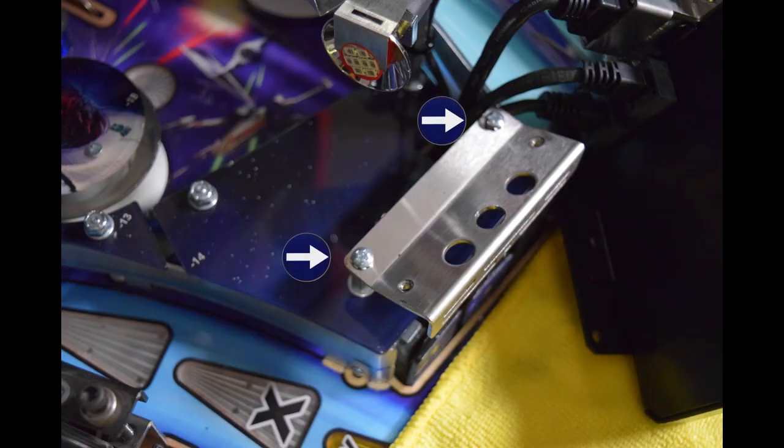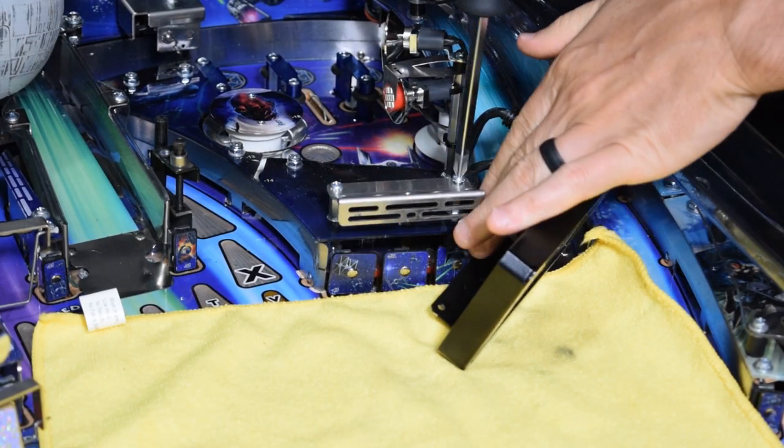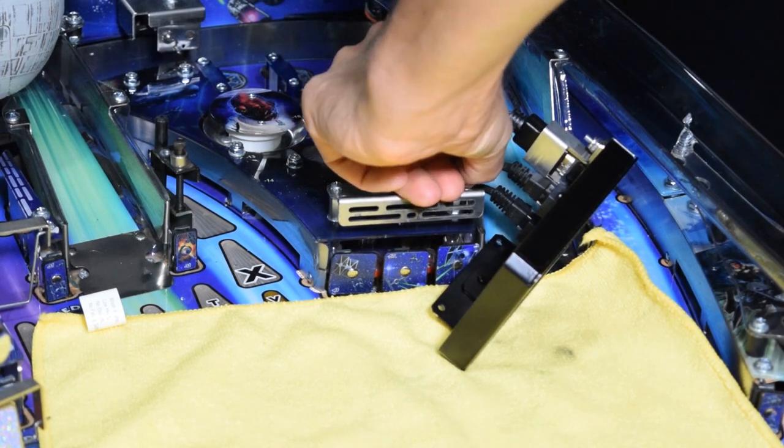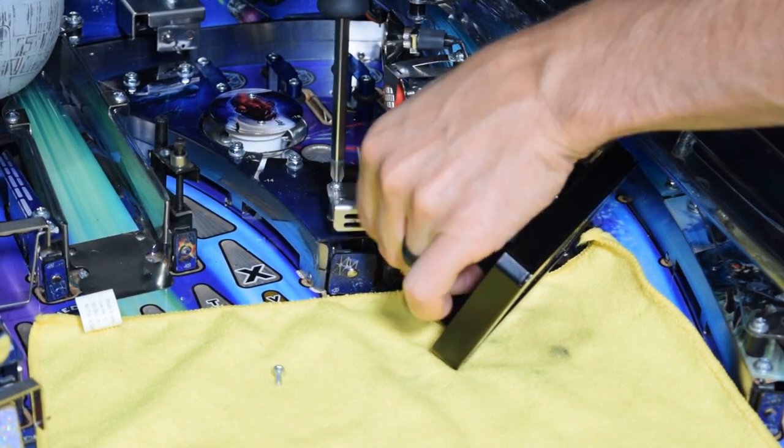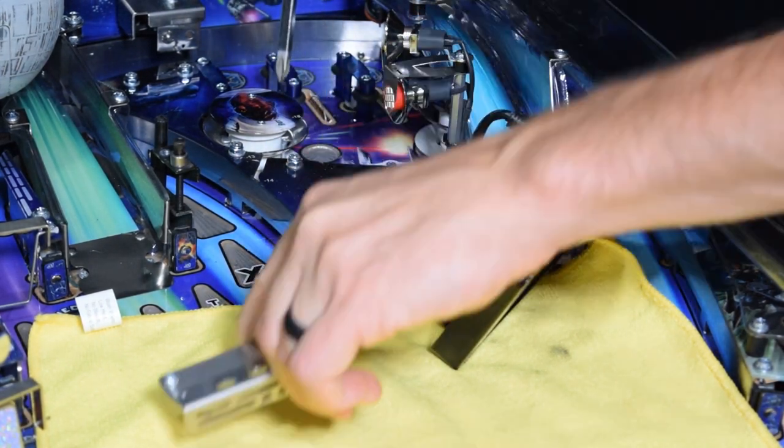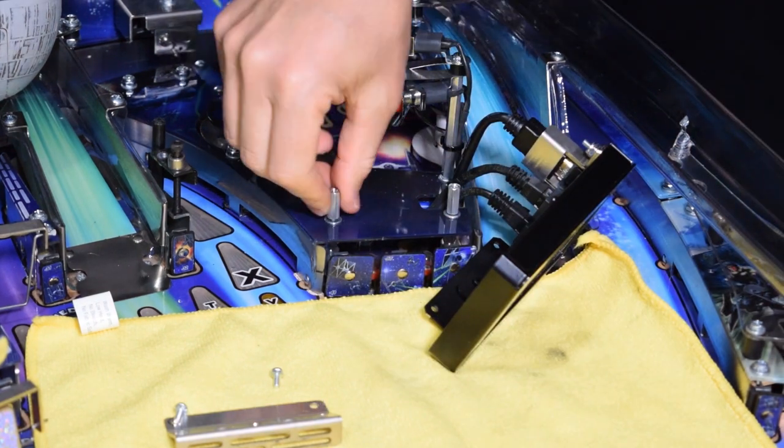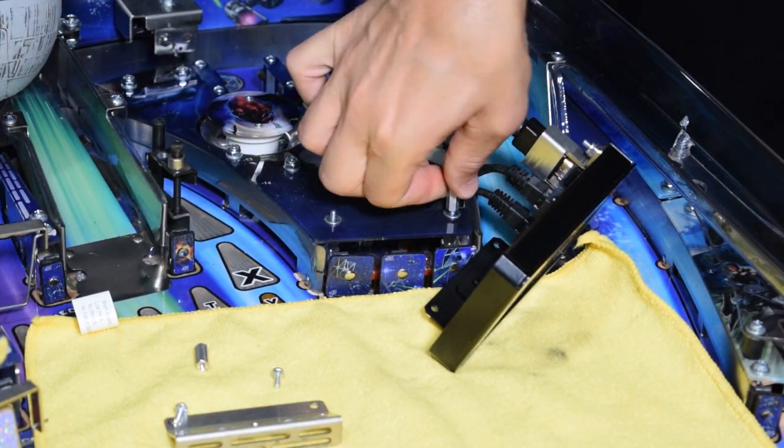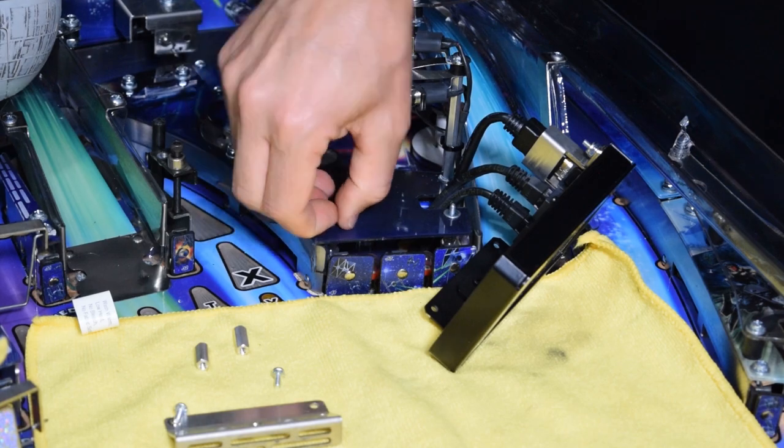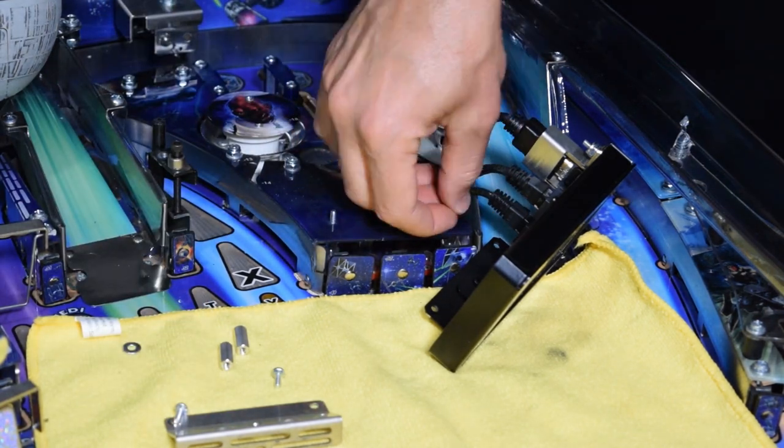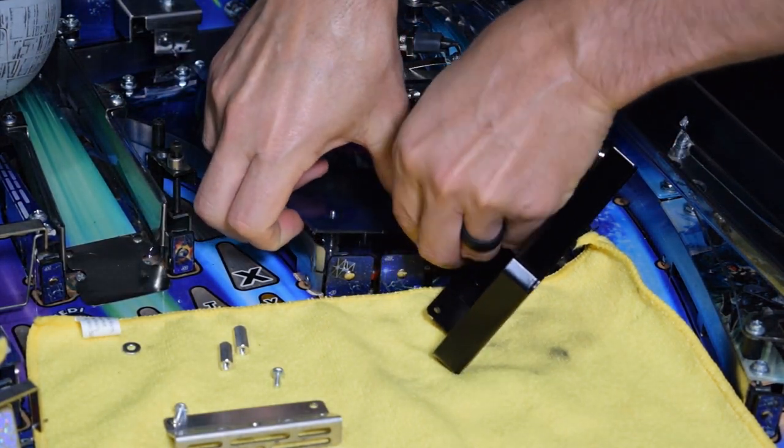To remove the monitor mounting bracket, you need to remove the two screws seen here. Go ahead and remove the two screws holding on the mounting bracket using a Phillips screwdriver. Next, use a nut driver to remove the two standoff posts and washers. Be gentle when removing the washers as they can sometimes stick to the playfield plastics.